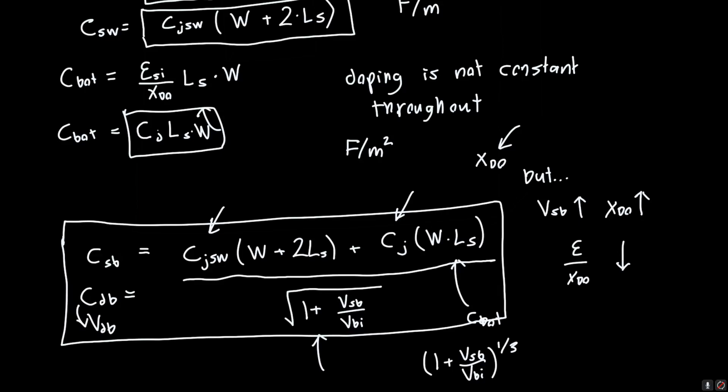You can do the same analysis for CDB — the capacitance between the drain and the body — by replacing VSB with VDB. It might look complicated, but just reduce it to each component capacitance and you'll understand where everything comes from. Thanks for watching!